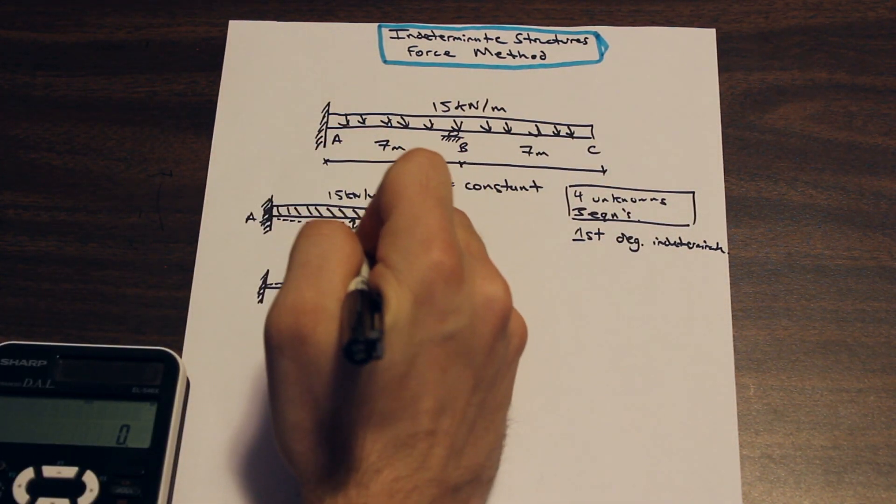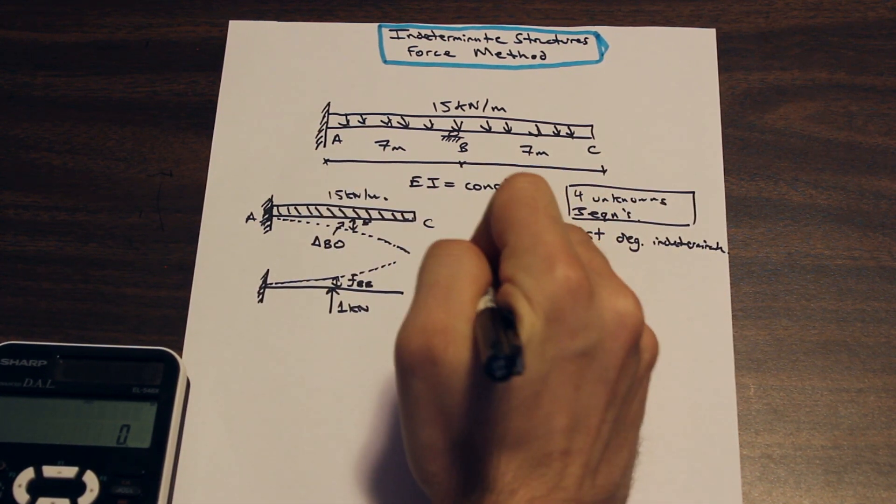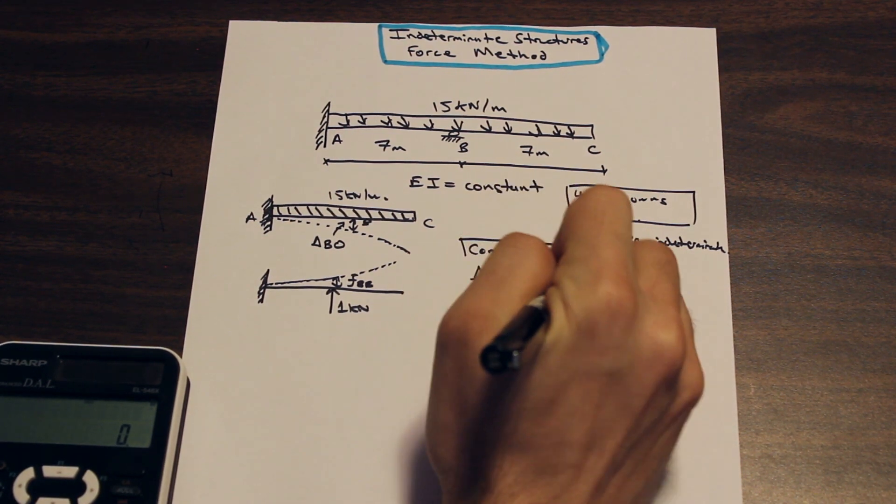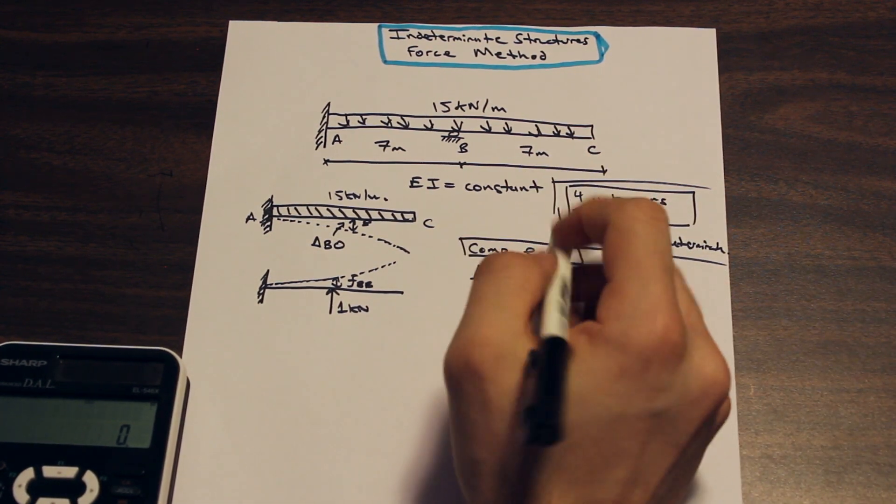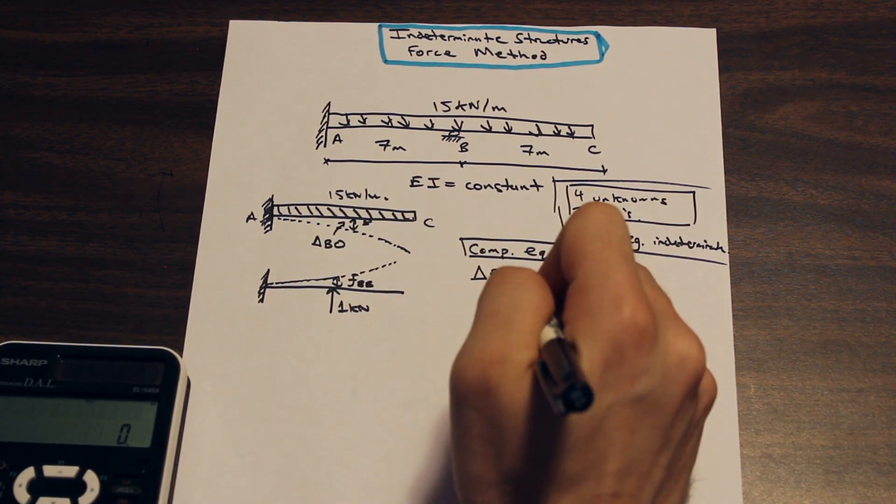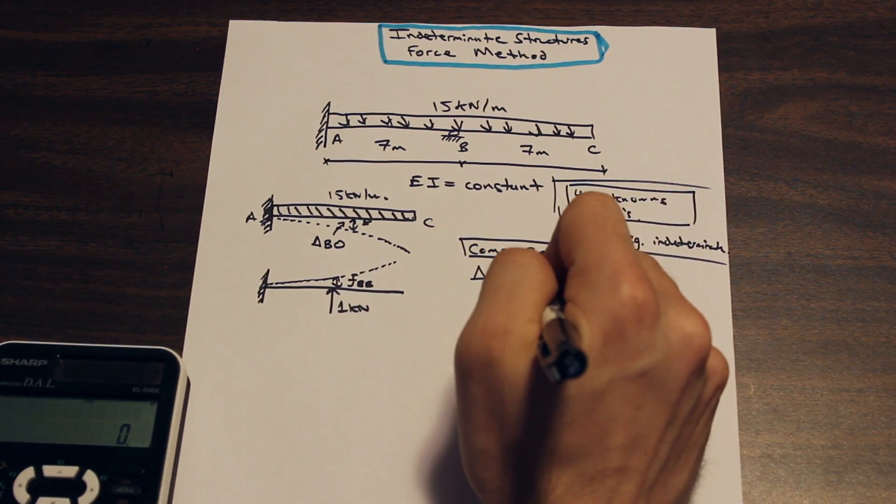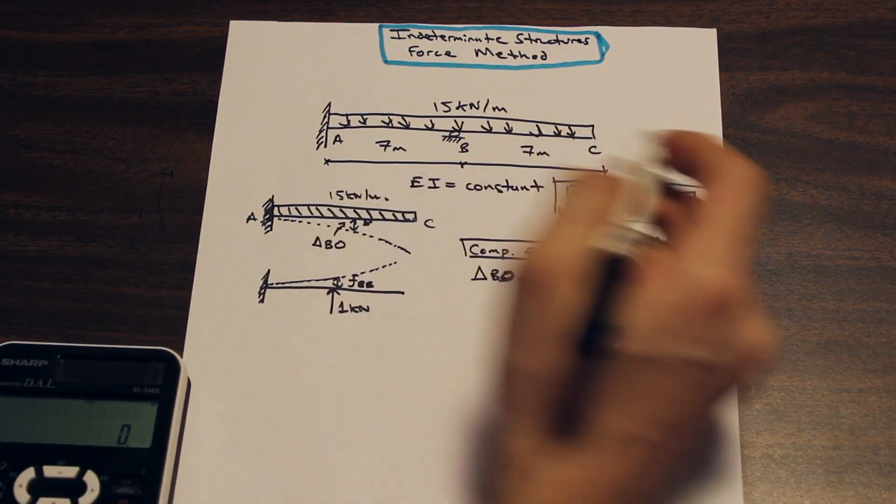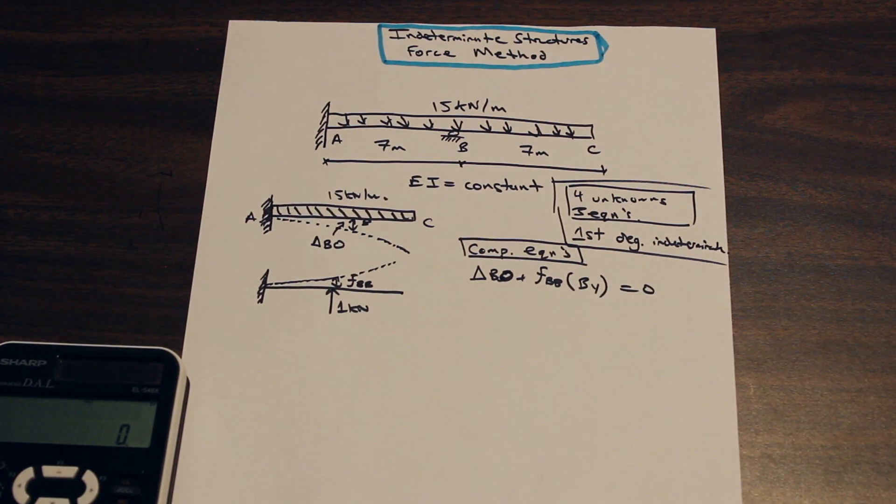So I'll just write that out for you. So we have the deflection at the point B, which is caused by the loading. So delta, and I'll just label this compatibility equations. So we have delta bo, so we start with the deflection due to the loading. And that is going to be plus the deflection caused by the unit load, which is FBB, times the reactionary force, which is by, and that has to be equal to zero.